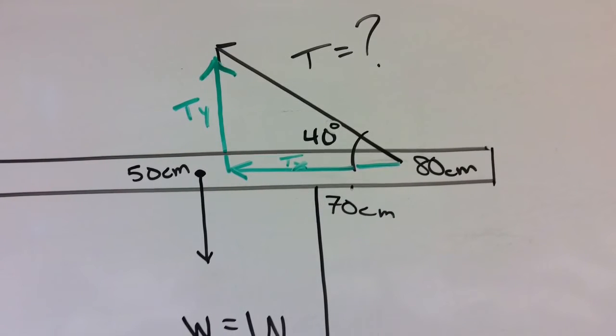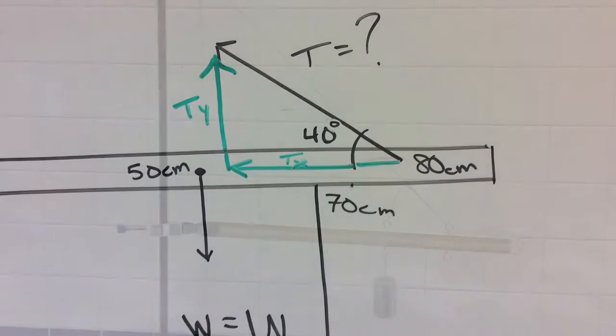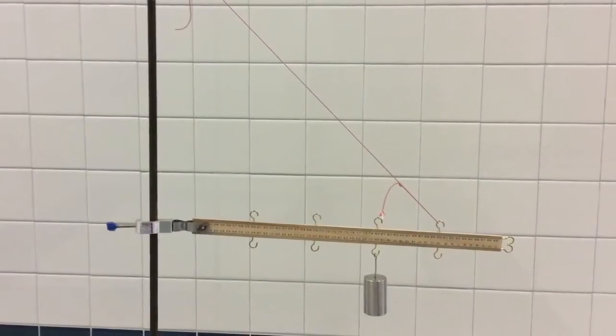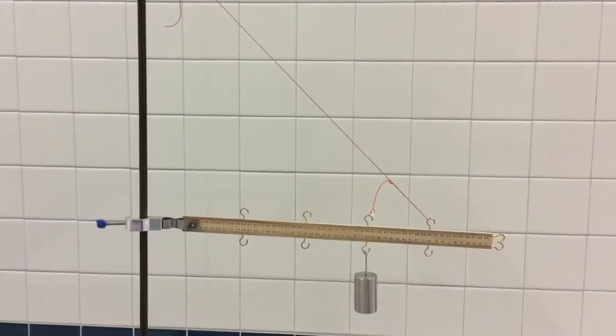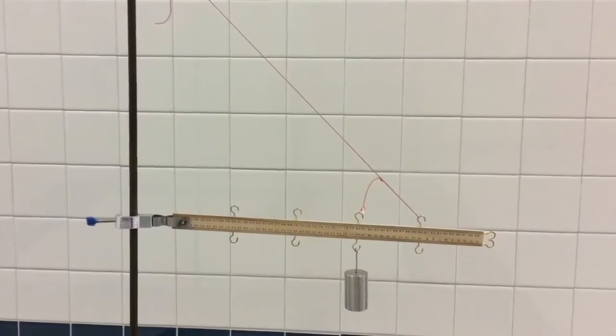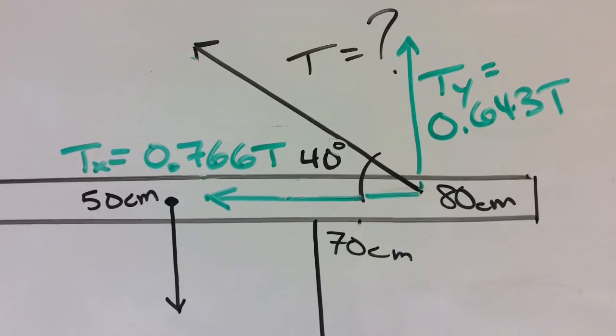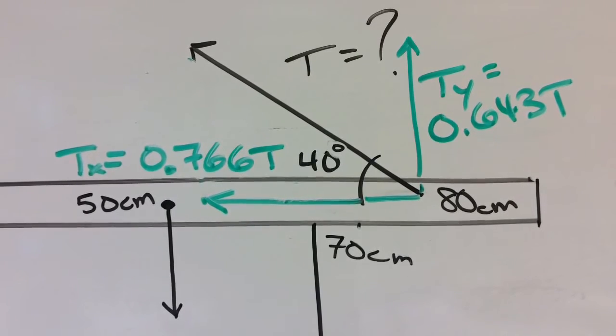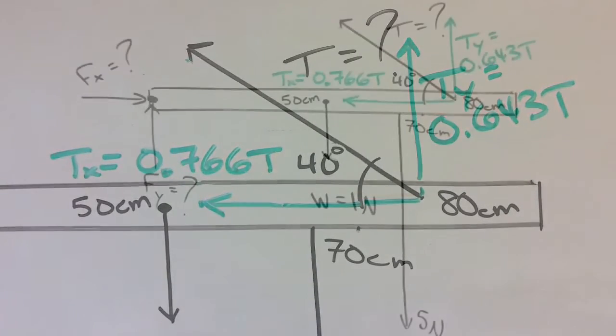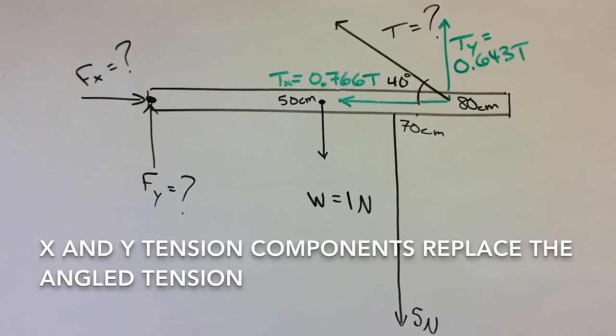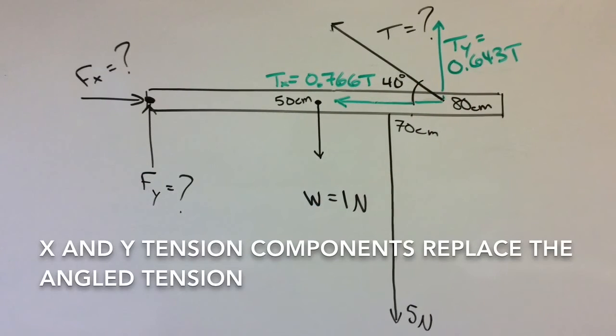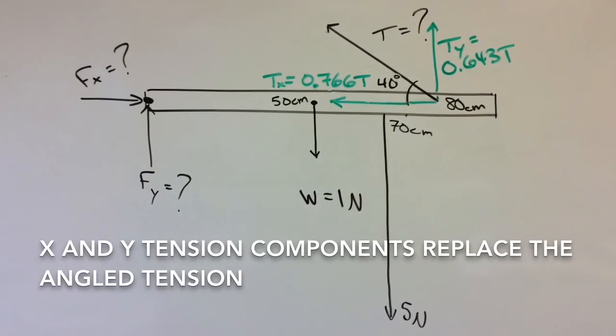We find components of vectors to make problems easier, but in this case we have to remember that the Tx and the Ty act at the attachment point of that rope, not anywhere else. So I'll be moving the Ty over to where it is actually applied. So we get this as a completed free body diagram: Tx, Ty, and T all acting at the same point.